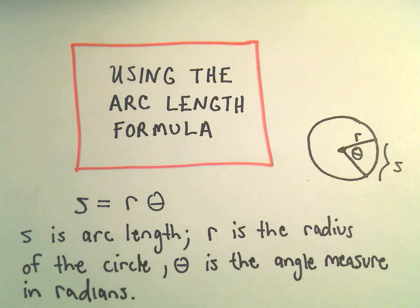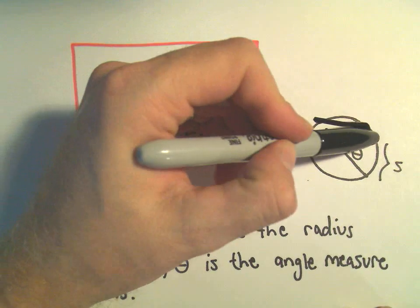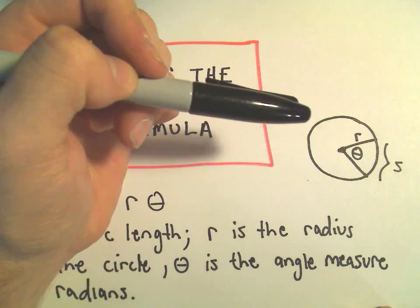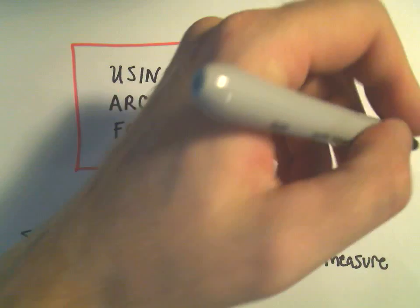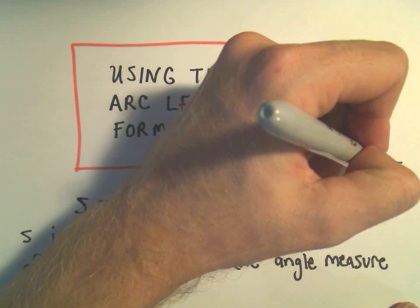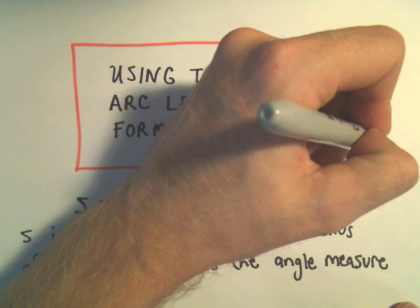You don't want to use degrees. So, again, basic idea, you've got a little circle, here's your radius R, some angle theta, the length, you know, this little curvy length, that's the arc length S.